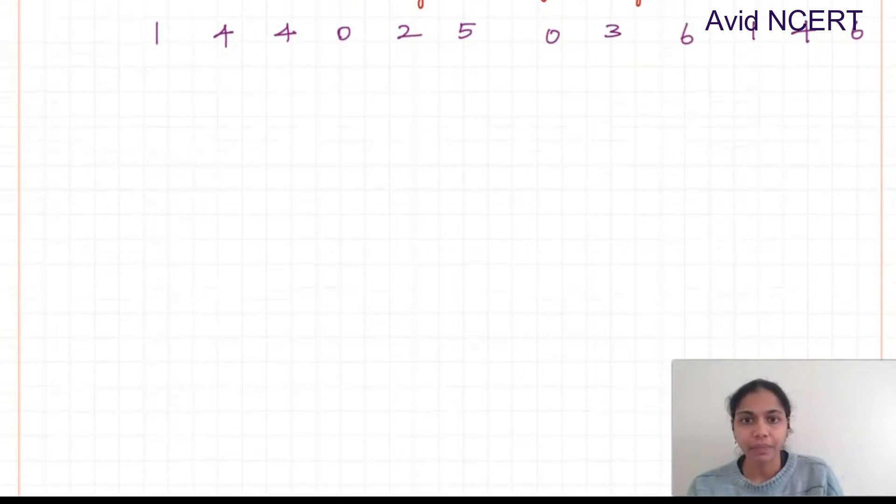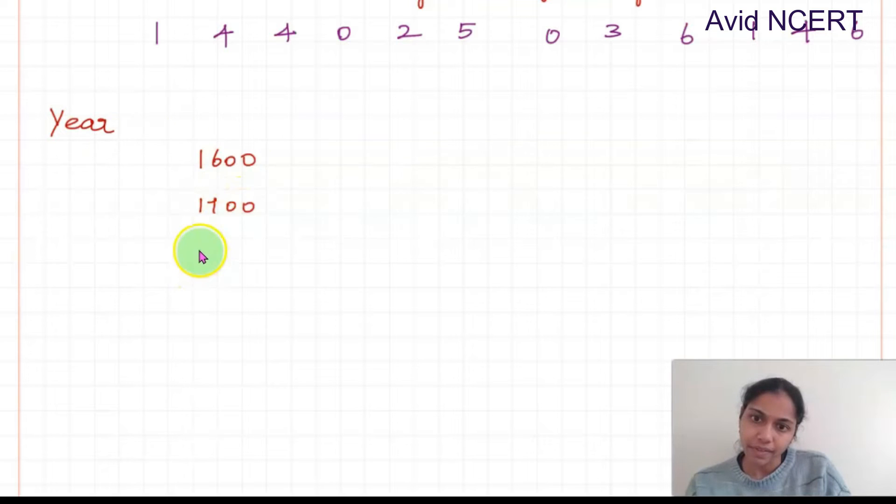Then the code for year. Start from 1600, 1700, 1800, 1900, 2000, 2100, 2200, 2300. So the code could be taken like this: 0, 2 times 0 is 0, 2 times 1 is 2, 2 times 2 is 4, 2 times 3 is 6.